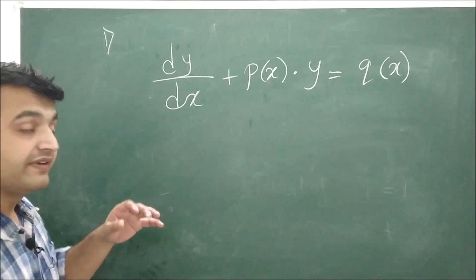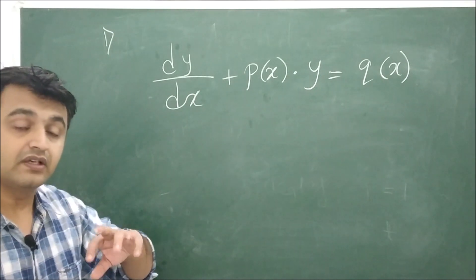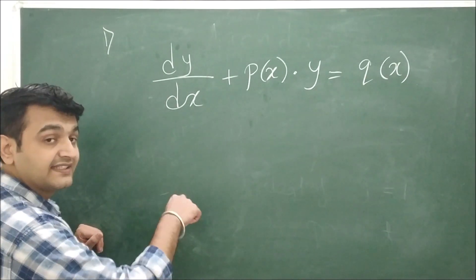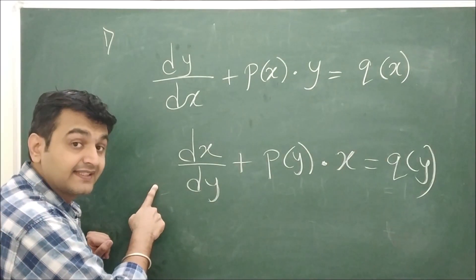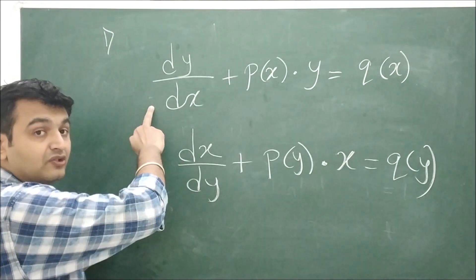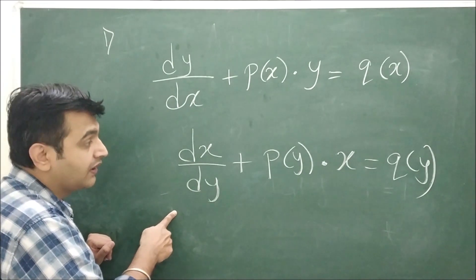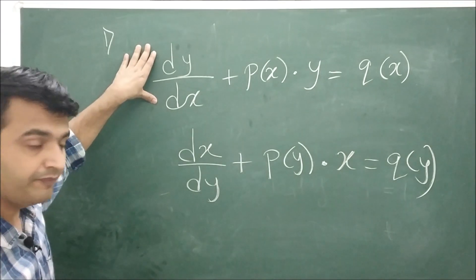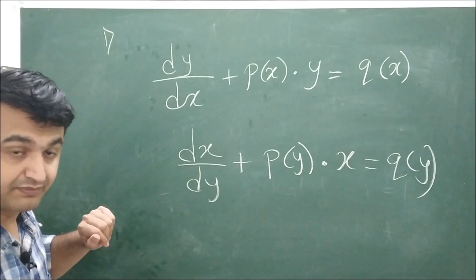Sometimes a differential equation in the standard form may be difficult to solve. In that case, we can reverse the roles: treat x as the dependent variable and y as the independent variable. The first-order linear differential equation then takes an alternate form with x as the dependent variable. Rewriting in this alternate form may make the problem easier to solve.